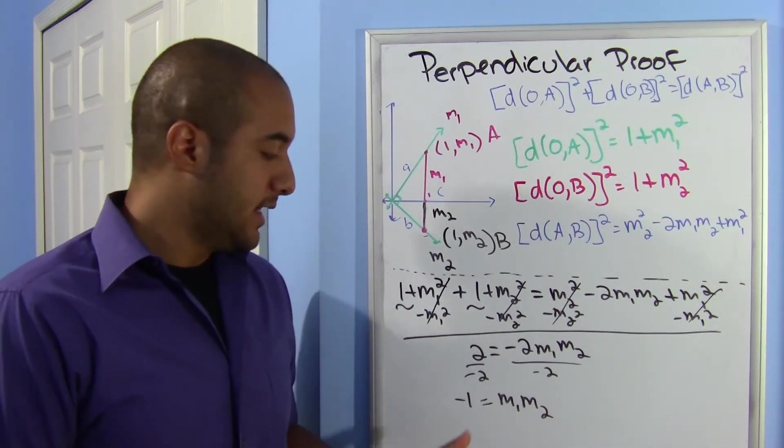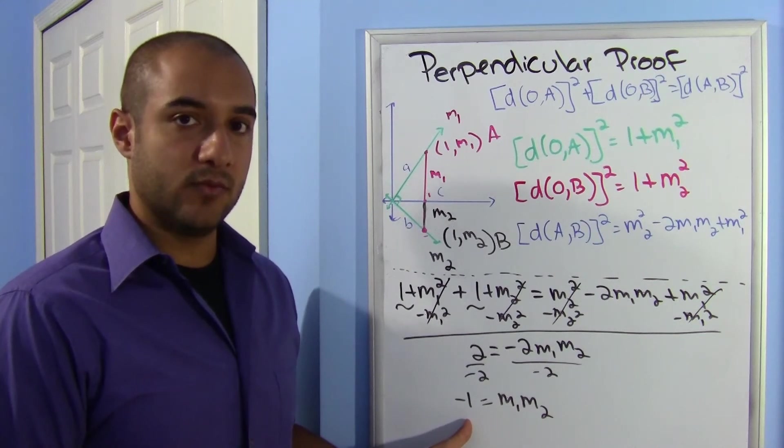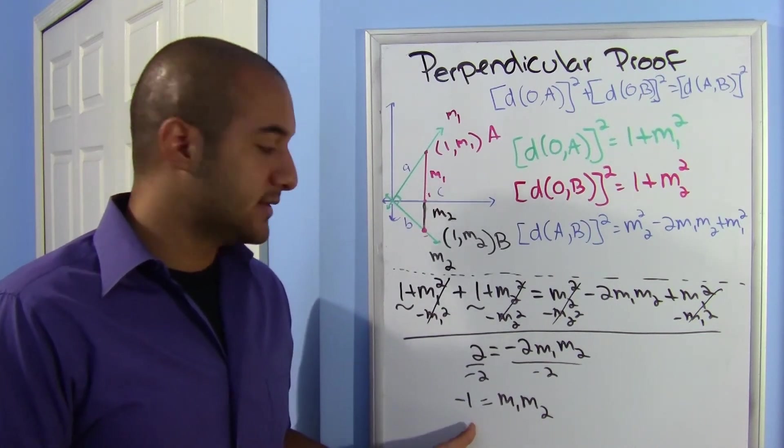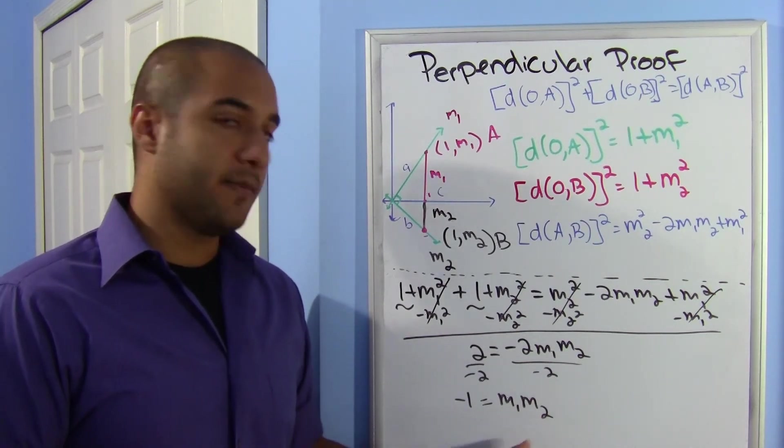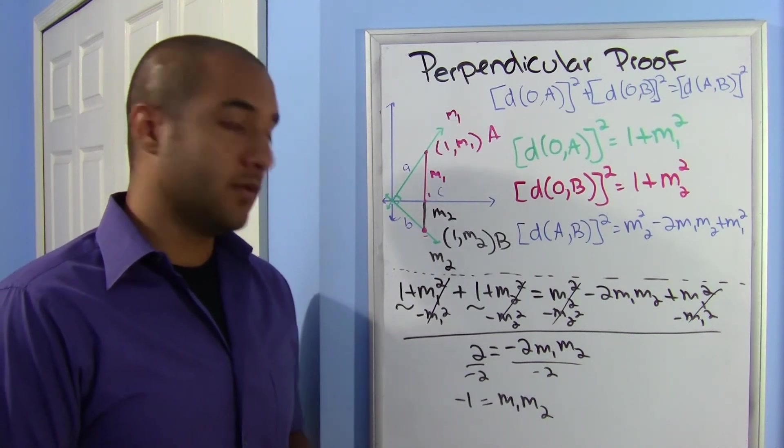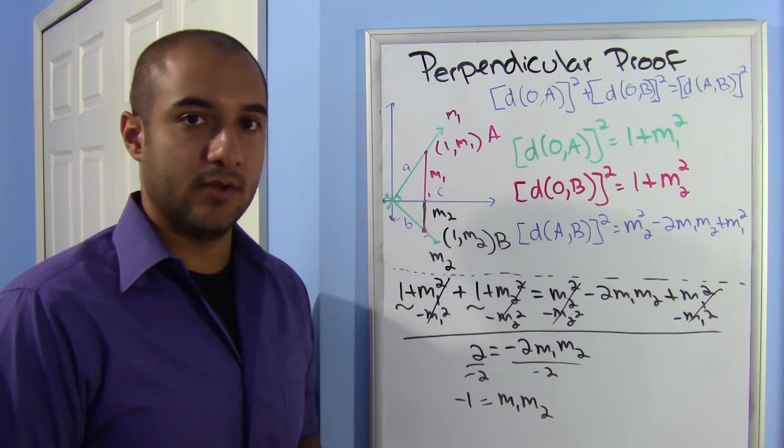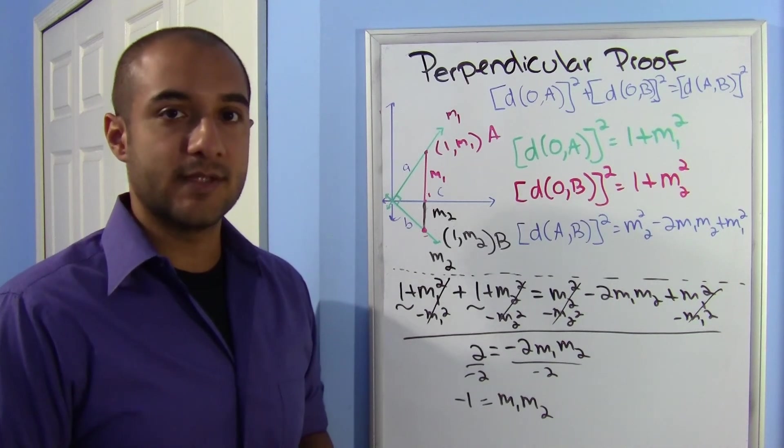Which shows that if you multiply the two slopes of perpendicular lines, they'll give you negative 1. The only way that could happen is if these are opposite reciprocals. So here you go, you have your proof of perpendicular lines. Until next time.